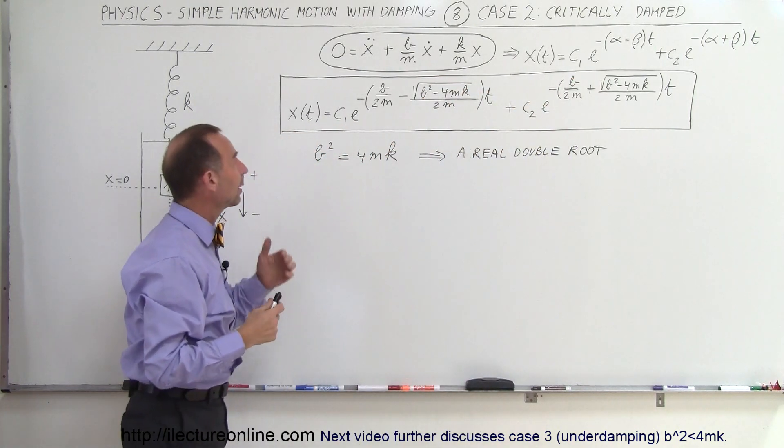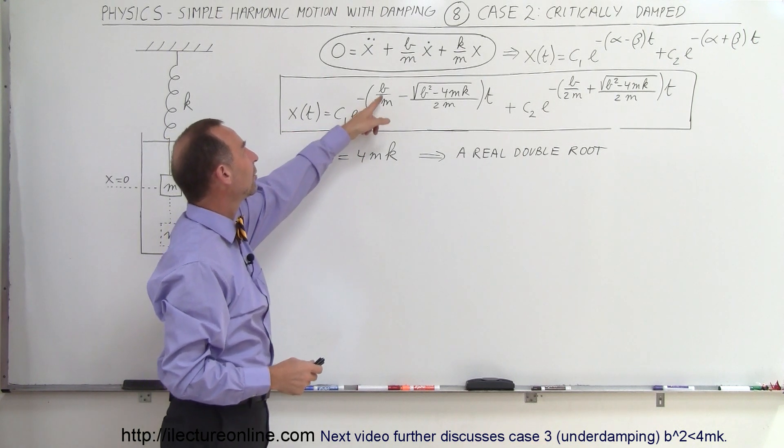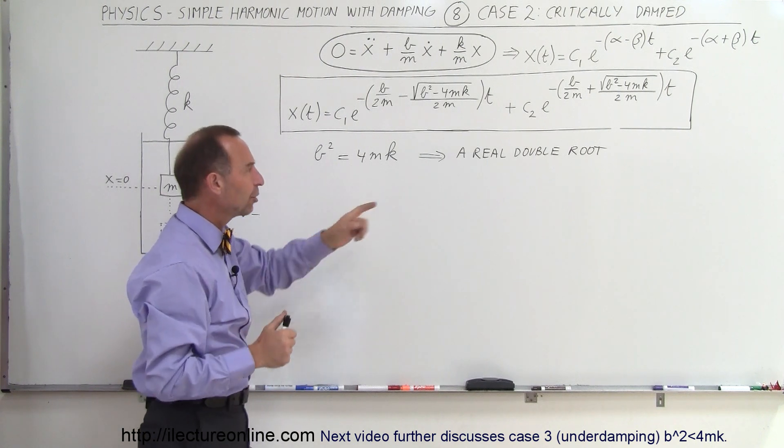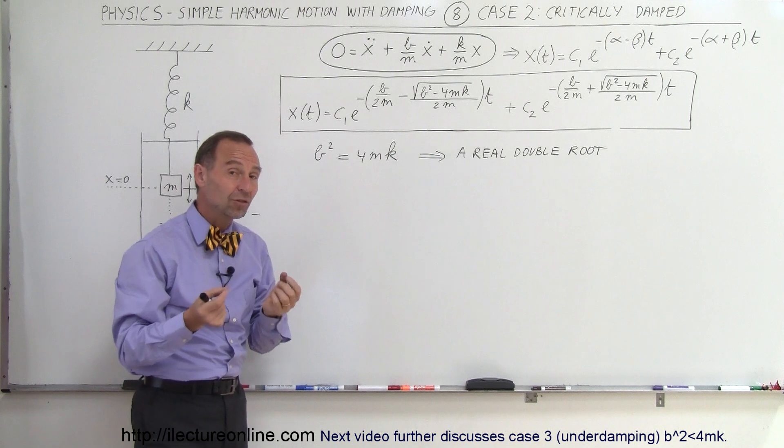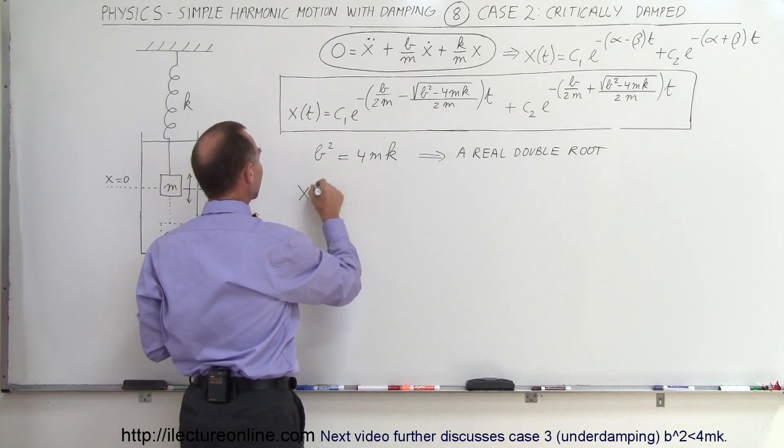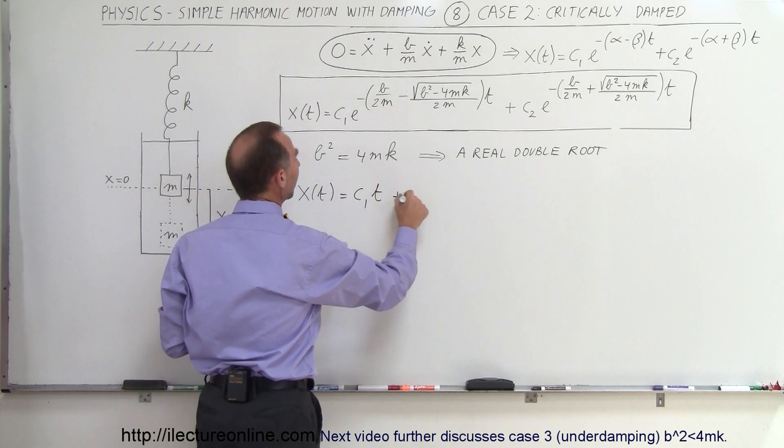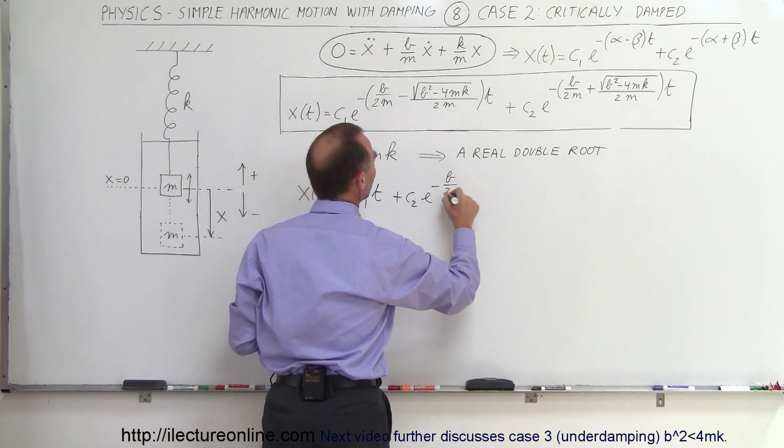And then at first you would say well then we have a solution where we have x sub t is equal to c1 e to the minus b over 2m or c1 plus c2. But since we have a double root, we have to use the concept of partial fractions to come up with the actual solution and the actual solution looks a little bit different. So we have x as a function of time is equal to c1 times t plus c2 times e to the minus b over 2m.